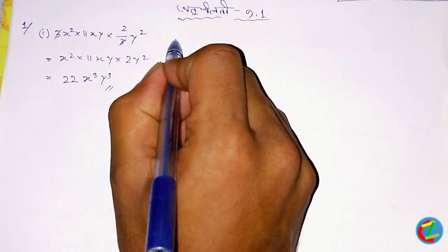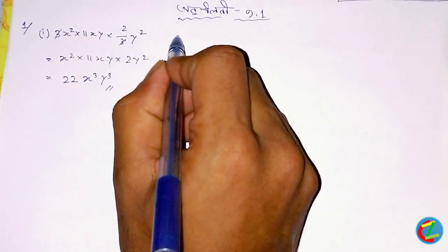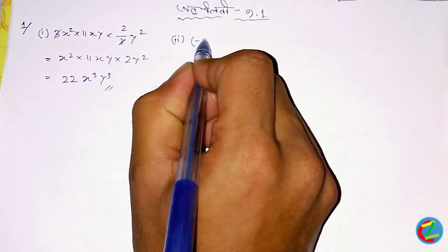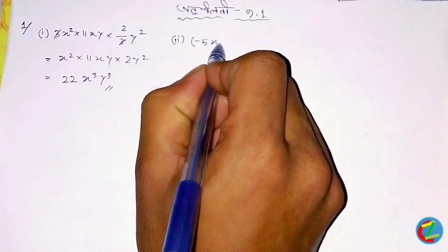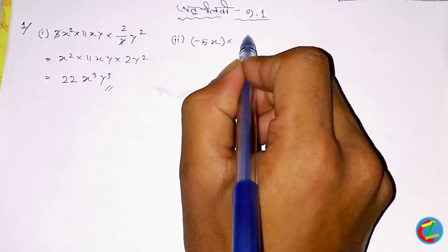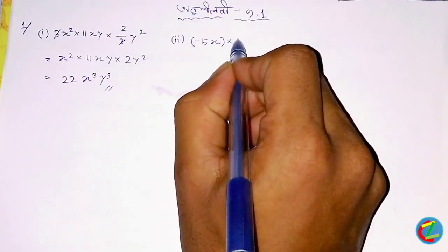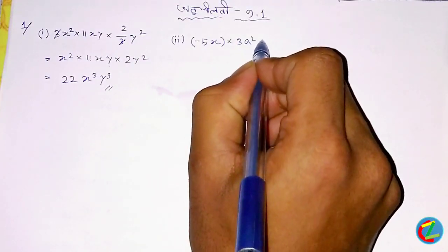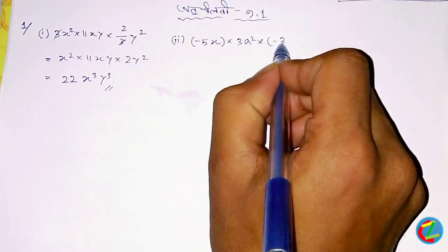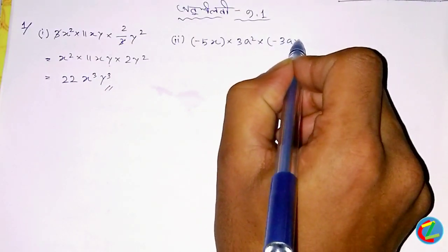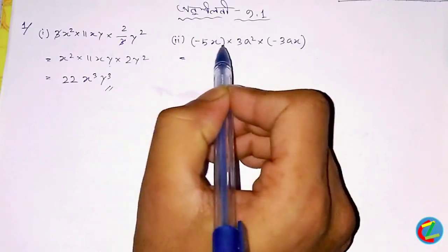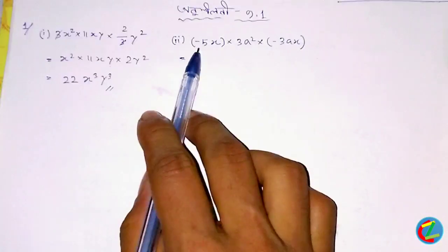x, 3y, r, y — total is equal to y. So this is what we have to do: minus 5x whole into twice a square, into minus twice x.